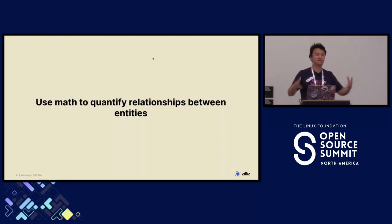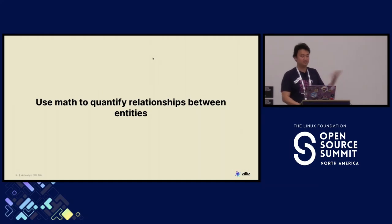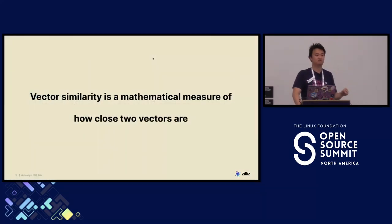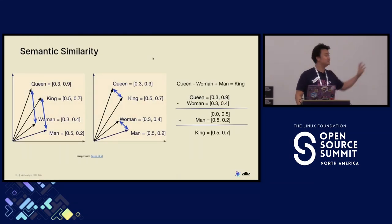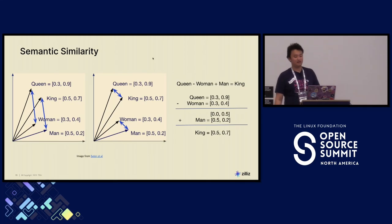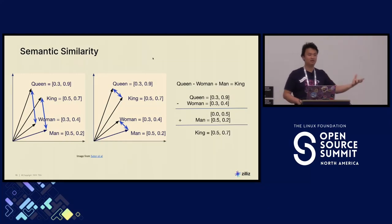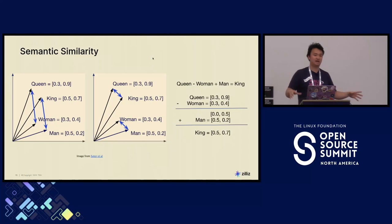The idea behind this is that you use math to quantify relationships between entities. This is a famous picture from NLP. If you take the word 'queen' and subtract the meaning of 'woman' and add the meaning of 'man,' you get 'king.' The only takeaway you need is: you can do math on things that aren't originally numbers using vector embeddings.